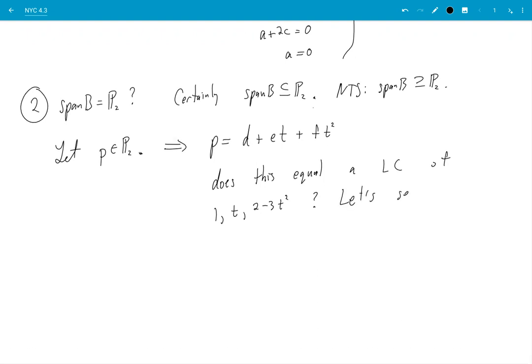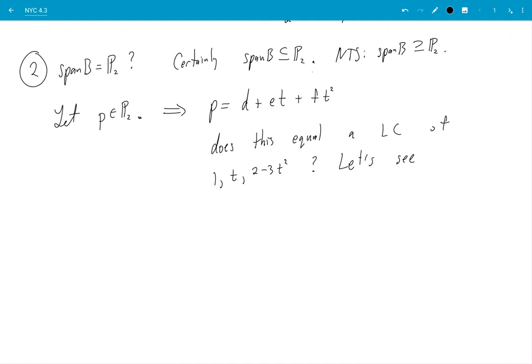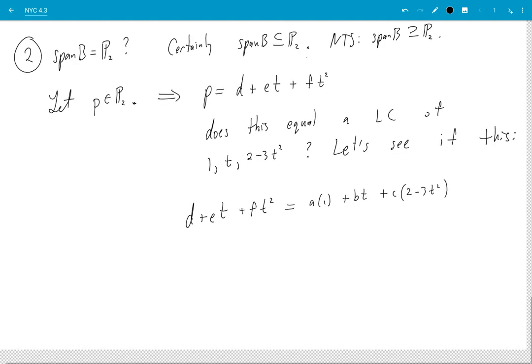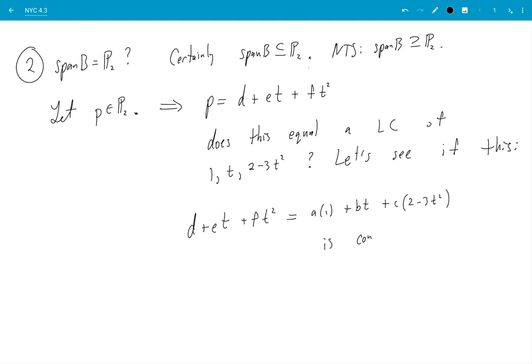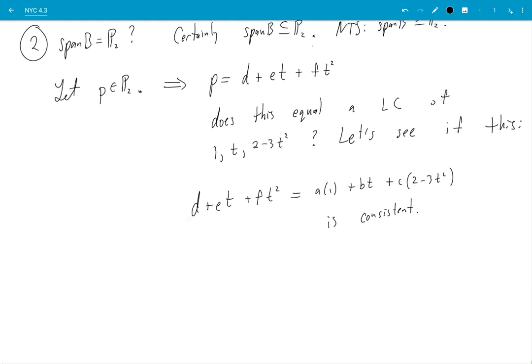A linear combination of 1, t, and 2-3t². Well let's see. So I'll just try, I'll just go set it equal and see what happens. Is it equal to something times 1 plus something times t plus something times 2-3t²? So maybe I'll say more specifically let's see if this is consistent, meaning can I find a, b, and c. So I do the same thing I did above. I'm going to collect like terms.